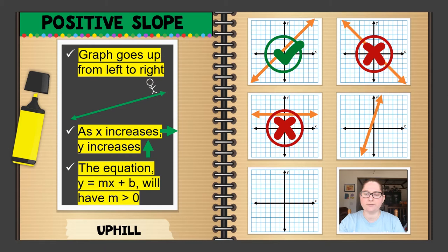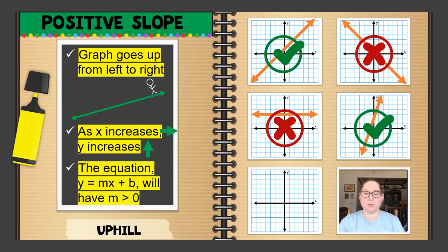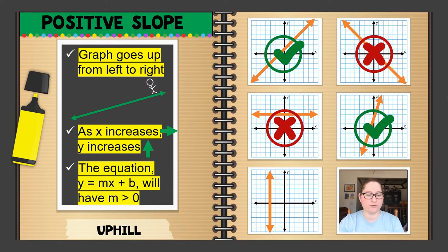On the fourth graph, my little guy goes up to the right side, so this one is also positive. On the last graph, he just fell — he's not going up, so that is not a positive slope. You'll see what type of slope that is in just a little bit.